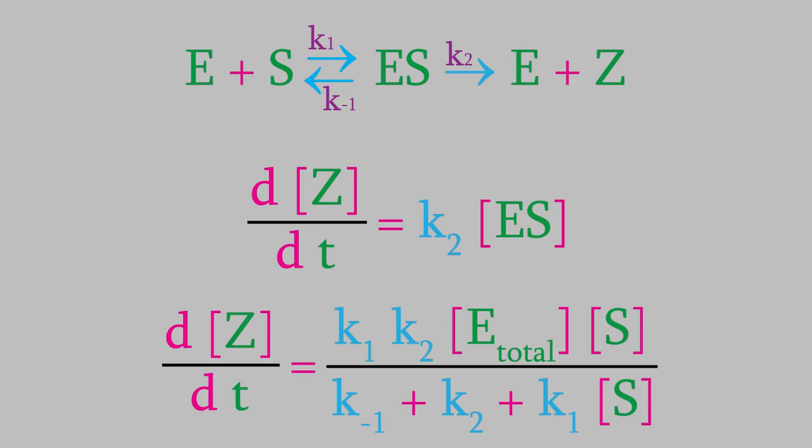If we plug it into our rate law, here's the equation we get. The important thing to notice here is that we have an expression for the rate with respect to the products, and everything on the right side of the equation is something that's easy to measure in the lab. All we have is E total, S, and a bunch of rate constants, all of which we can measure easily.